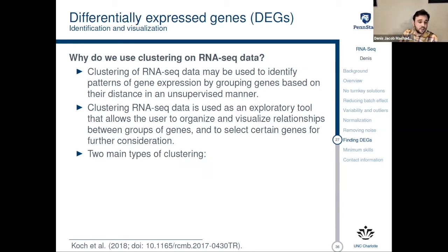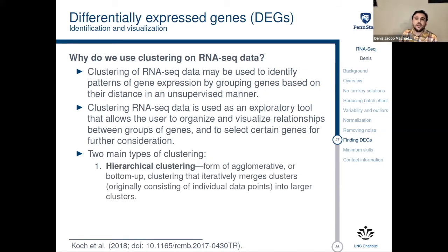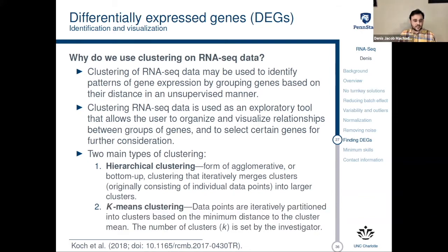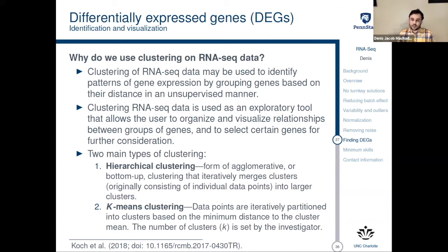There are two main types of clustering. Hierarchical clustering creates a kind of tree with clades, which basically puts smaller clusters into bigger clusters. Another strategy is k-means clustering, where data points are iteratively partitioned into clusters based on the minimum distance to the cluster mean, and the number of clusters — k — is set by the investigator. Again, this is another thing you cannot do automatically.